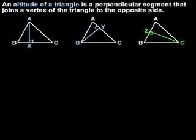So there are a total of three altitudes that can be drawn for triangle ABC: segments AX, BY, and CZ.